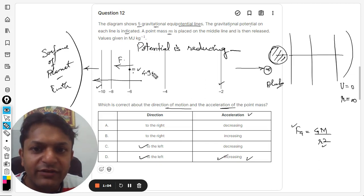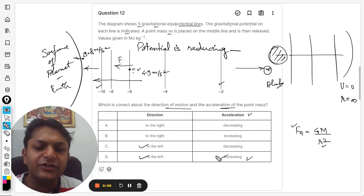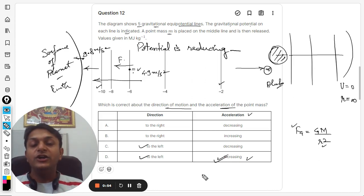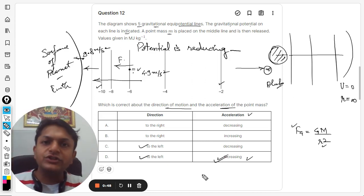But at the surface of the Earth, it will become 9.8. Clearly, even the acceleration is increasing. So point number one: the force is increasing. The force is increasing; it means the acceleration is increasing. It is always positive, and it is increasing.